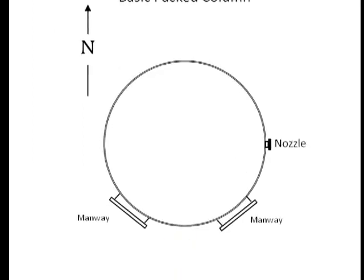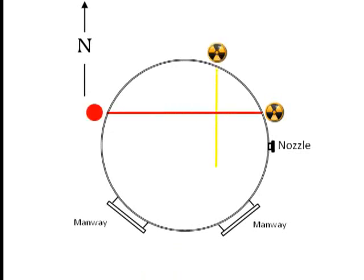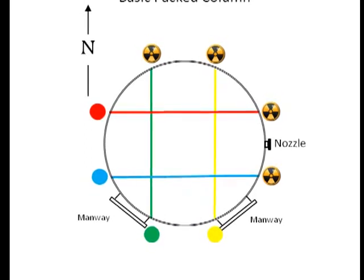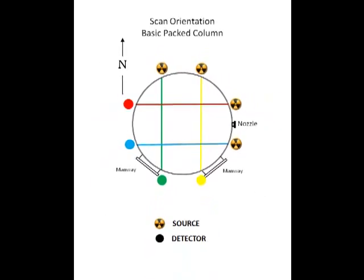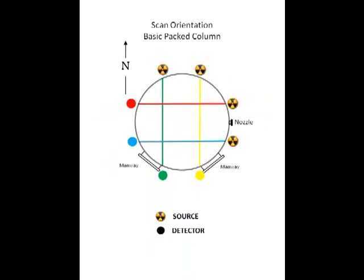As shown in this scan orientation diagram, four consecutive scans were performed, rather than just one, and the results of the four scans are then compared to each other. If the packed sections are operating normally, the four scans should look similar through the packing when overlaid.